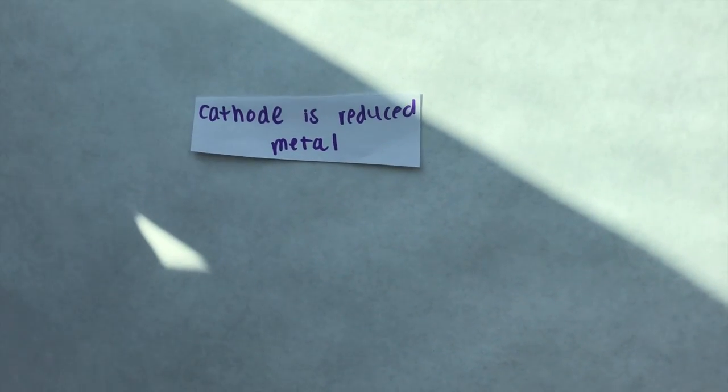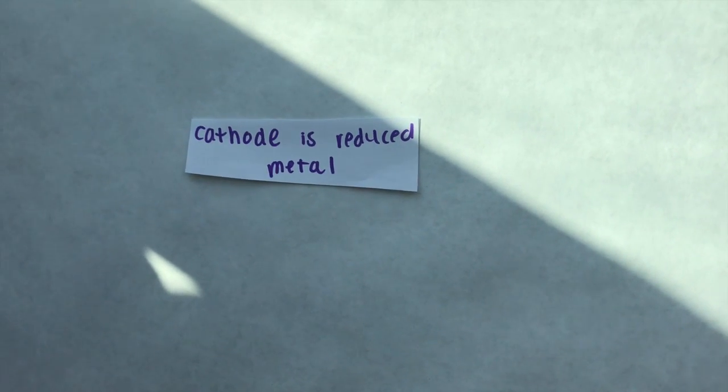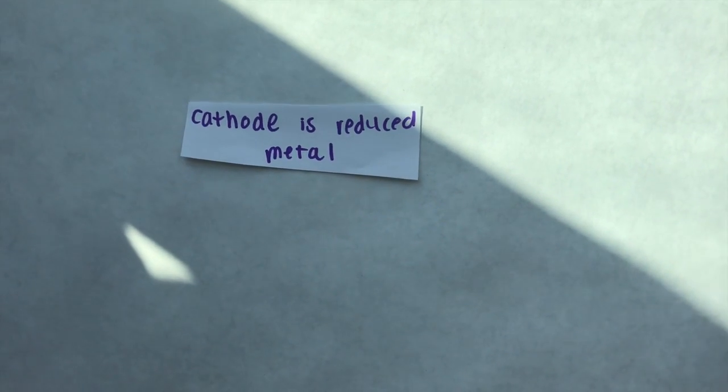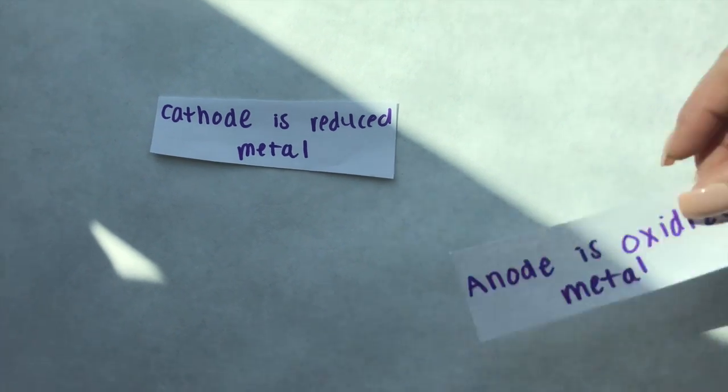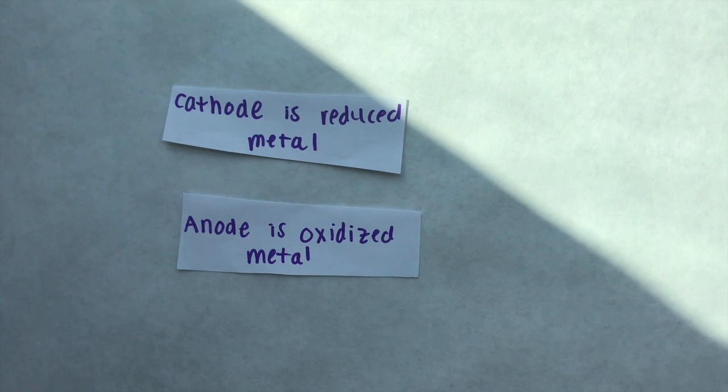Reduction and oxidation occur at different sections of the cell. The cathode hosts the process of reduction. An easy way to remember this is by thinking red cat. The anode hosts the process of oxidation. A good way to remember this is by remembering the phrase anox.